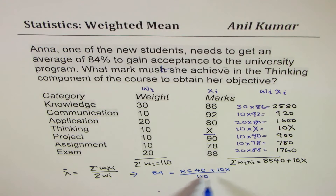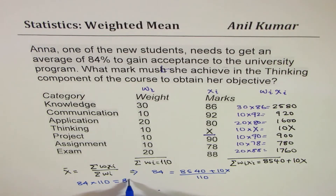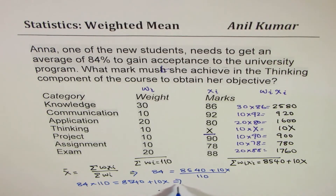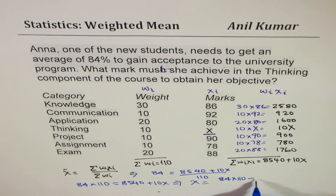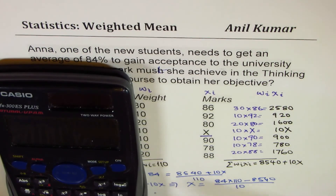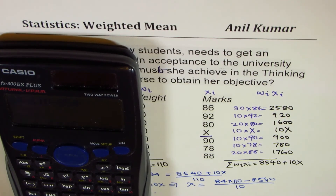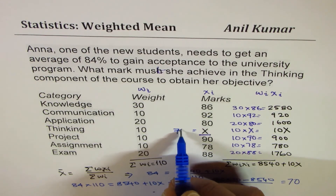Now we can rearrange and solve for x. So we have 84 times 110 equals 8540 plus 10x. To find the value of x, taking this to the left side, we have x equals (84 times 110 minus 8540) divided by 10, which equals 70. So the value of x should be equal to 70%.